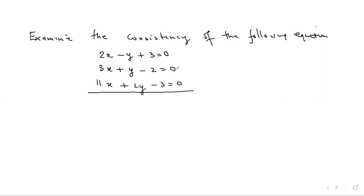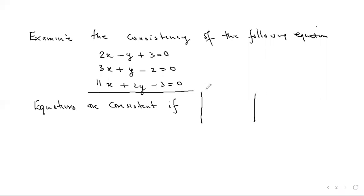The equations are consistent if the determinant equals 0. Since all equations are in the format equal to 0, there's no need to move the constant to the other side. So the determinant is |2 −1 3 / 3 1 −2 / 11 2 −3|. The condition is that all equations should be in the same format — you should not have some on the left and some on the right.